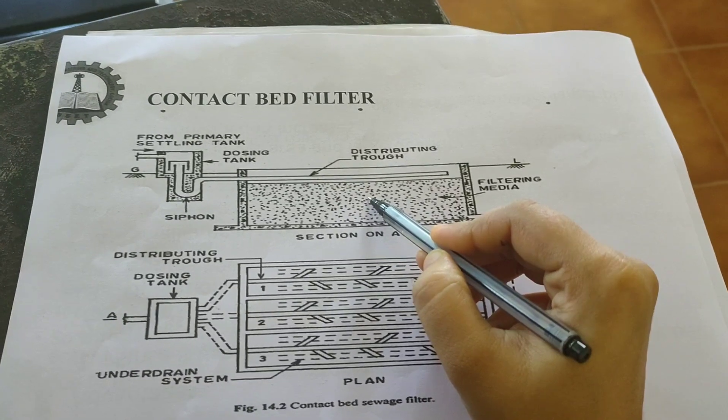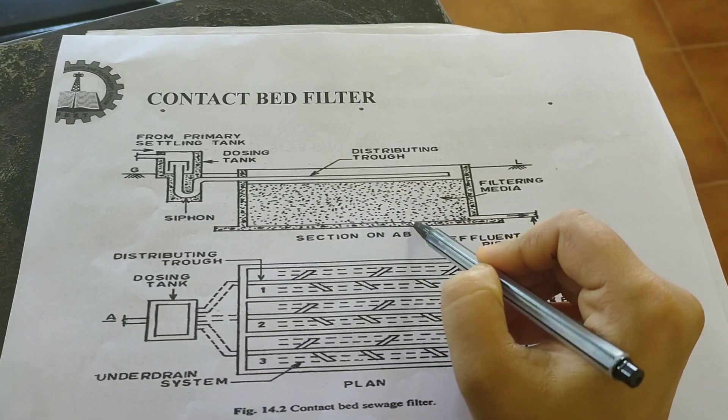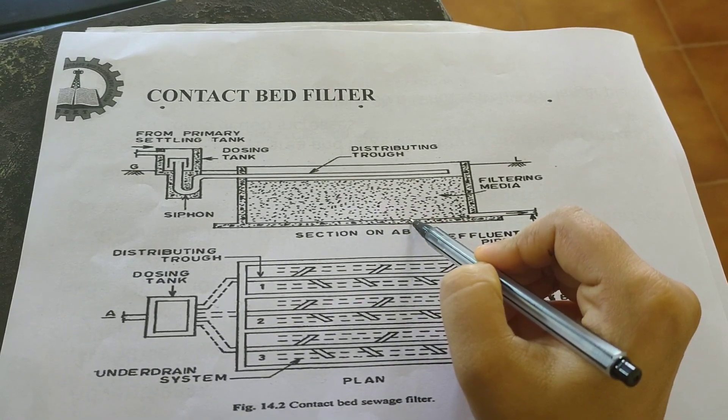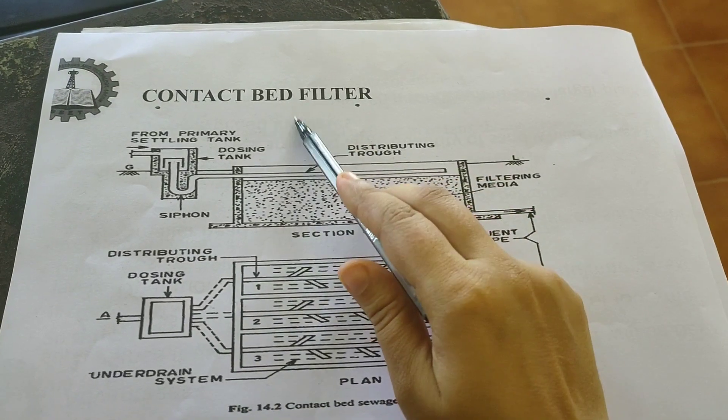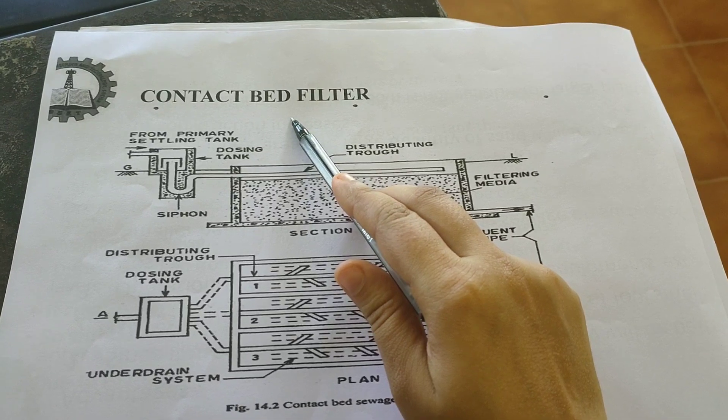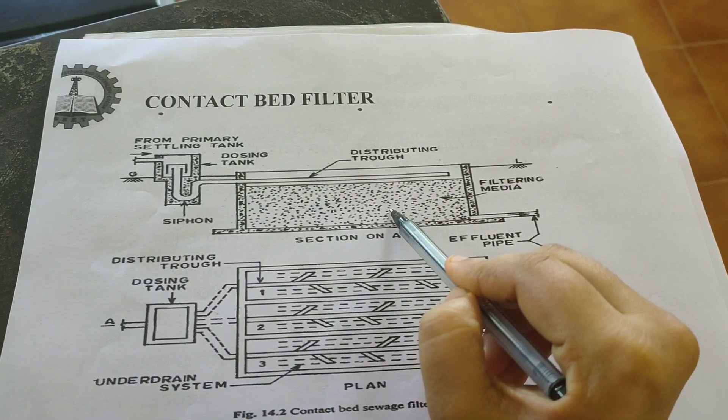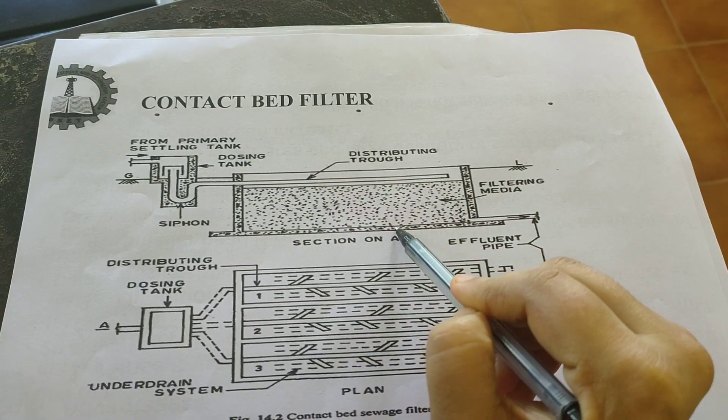One is that its filter material has a much higher size than the filter material used in intermittent sand filter, and also this particular filter has lining. So these two are the factors which differ this contact bed filter from intermittent sand filter.